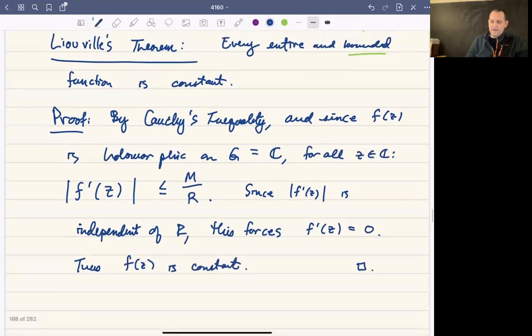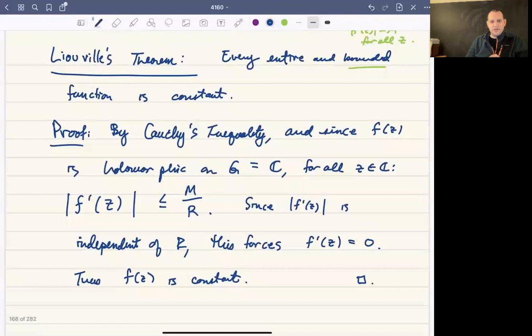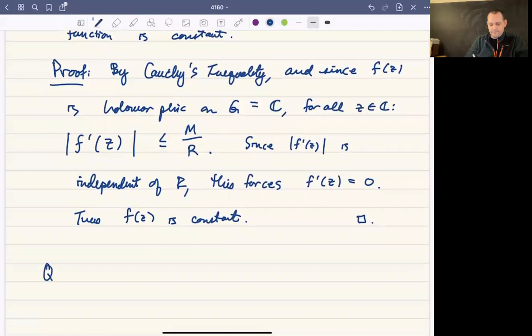So every entire and bounded function is constant. Now, one footnote and one question for you. What about sine? Why is sine of z not a counterexample to this function, to this theorem?